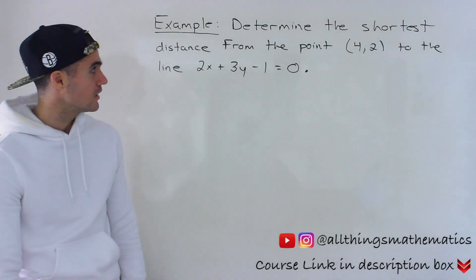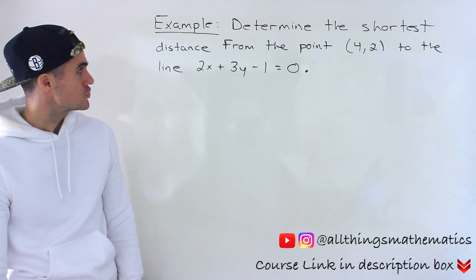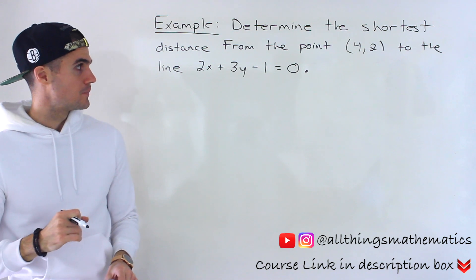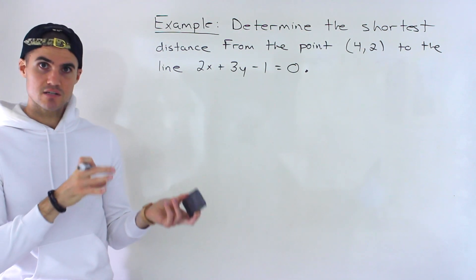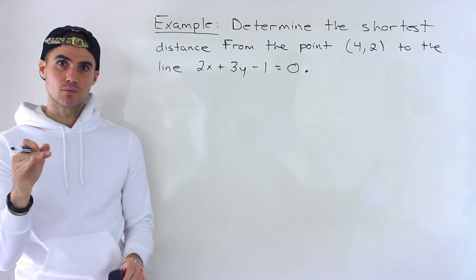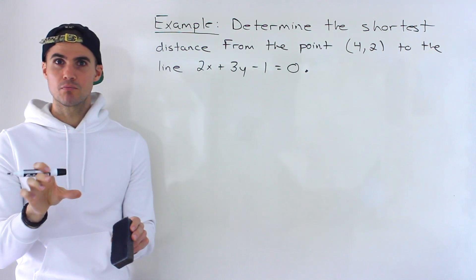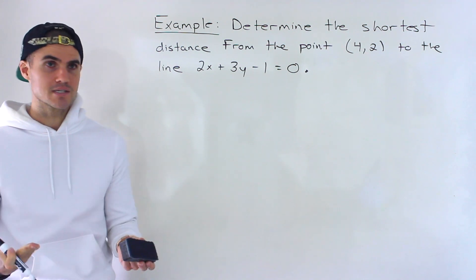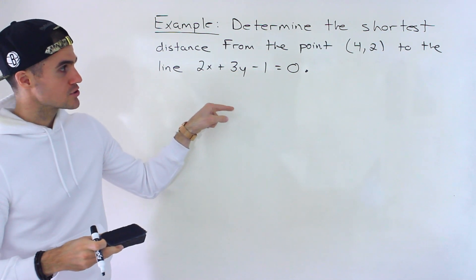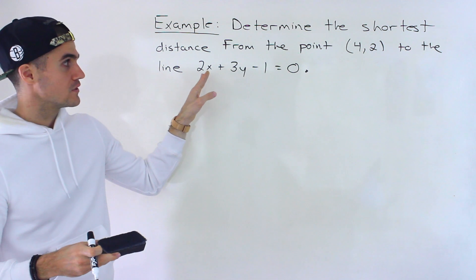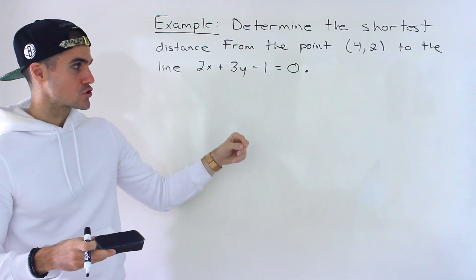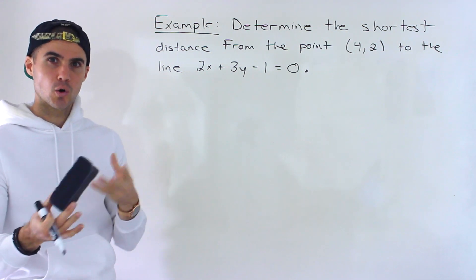Welcome back everyone. Patrick here. Moving on to the next example, we have to determine the shortest distance from the point (4, 2) to the line 2x plus 3y minus 1 equals 0. This is another question dealing with the shortest distance from a line to a point. We've gone over examples before on this on the website — if you're watching on YouTube, check the description box for a link. I'm assuming you've watched the overview video where I describe the general steps and also show a formula for a quicker approach.